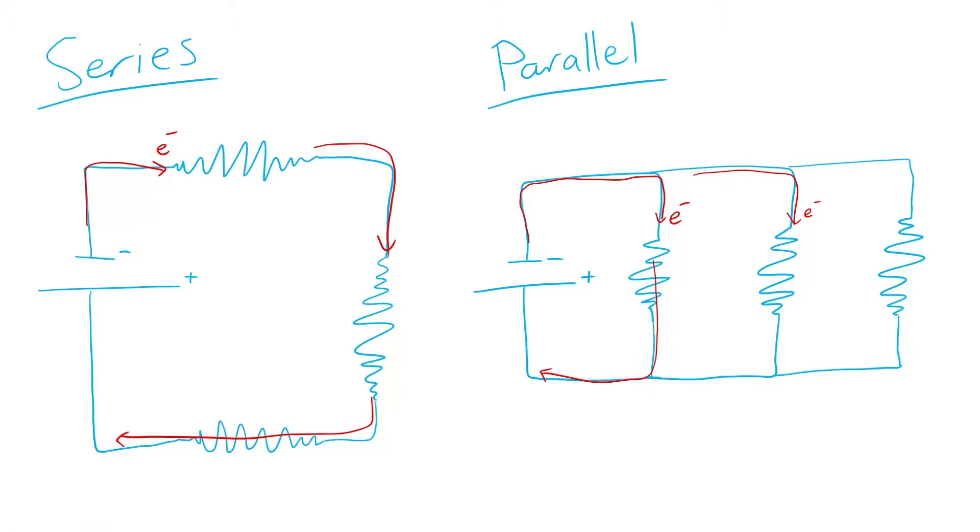So we'll use a different formula for each circuit to get the total resistance. For a series circuit, we'll simply add up the resistance of each resistor to get the total resistance.